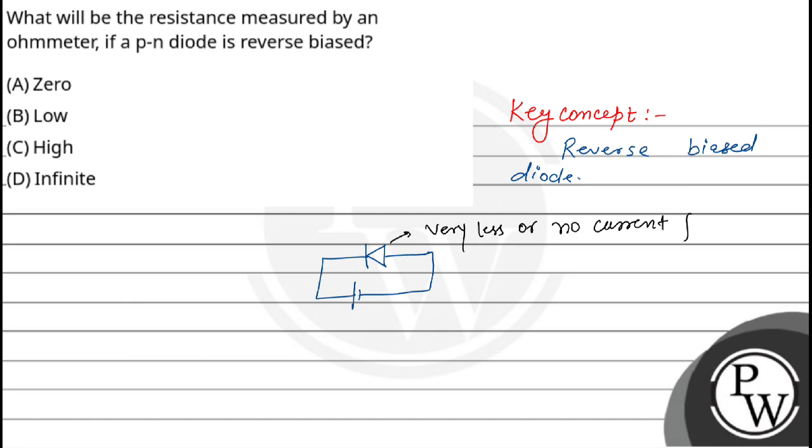And this is what happens because the depletion layer of the reverse biased diode increases, and this acts like a barrier which blocks the electric current.